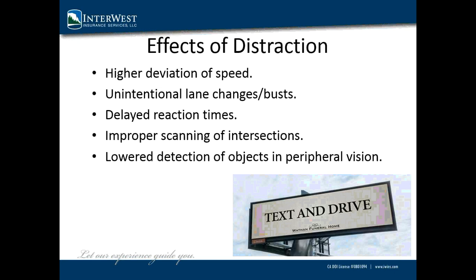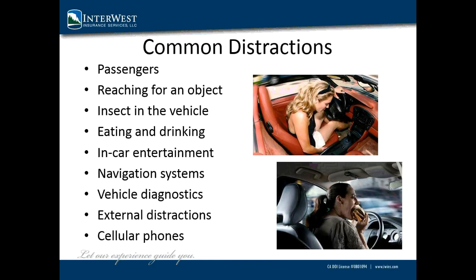Inattentional blindness can occur when you are trying to focus on more tasks than your brain has the ability to handle. When this occurs, your brain will essentially ignore events unfolding in your vision, which may include a potentially serious hazard. Let us briefly discuss some common distractions most drivers encounter. As you will notice, distractions do not always fit neatly into just one of the categories discussed earlier.